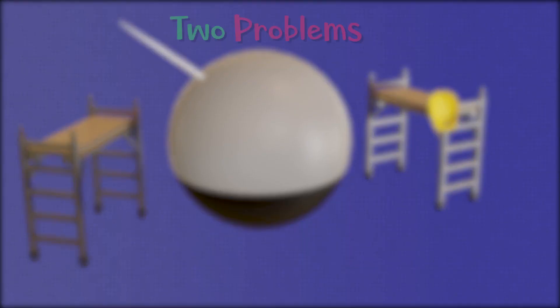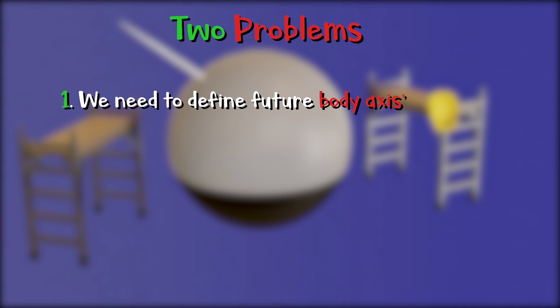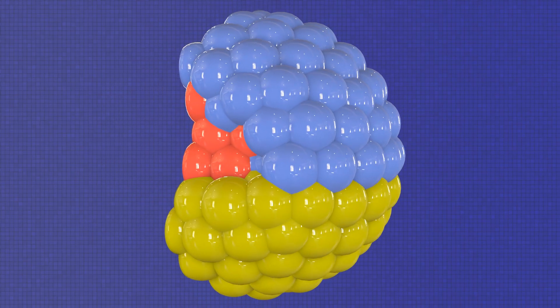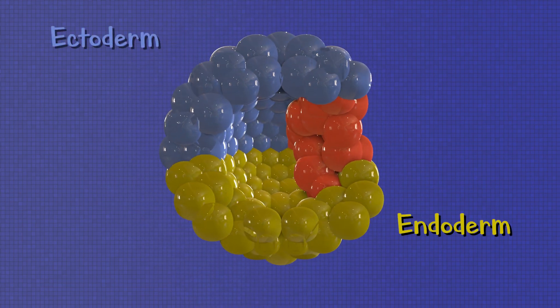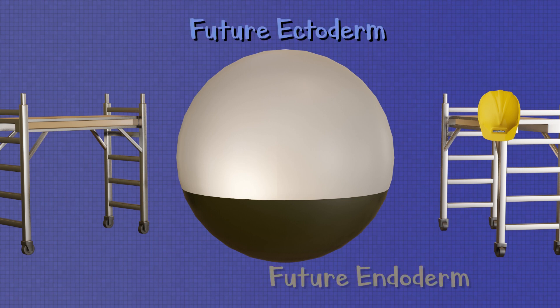So to begin, our egg has two problems. It needs to create or establish its principal body axes, and it needs a third germ layer. All vertebrates as they develop are formed from three germ layers: endoderm, ectoderm, and mesoderm. As it exists now, this egg will only form ectoderm and endoderm from the animal and vegetal pole cells. We'll come to this issue later.